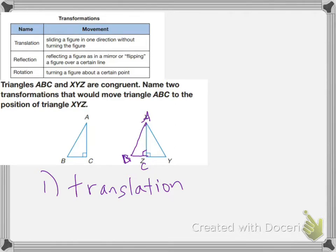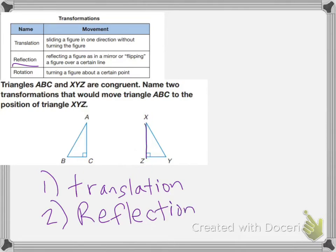So I need to now flip the triangle on top of the other one, and to flip it, that would be a reflection. So the second step is to do a reflection of the triangle, which at that point would put it on top of the other one like this. And then that would be ABC like that.